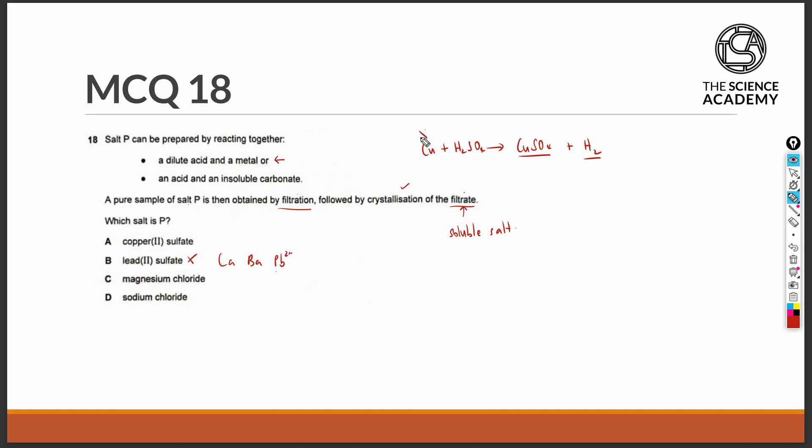However, copper is very unreactive as a metal and will not react with acid to give you the salt and hydrogen gas. Therefore, copper 2 sulphate cannot be obtained by method 1, and option A can be eliminated.